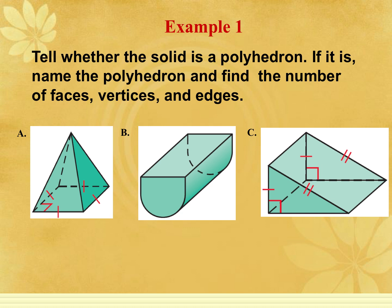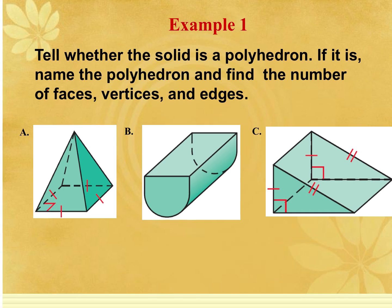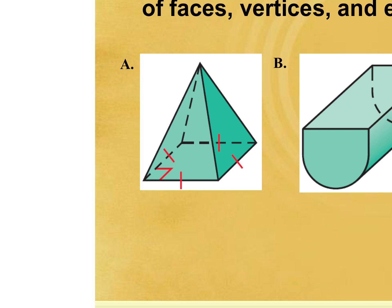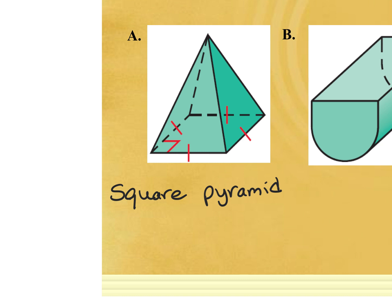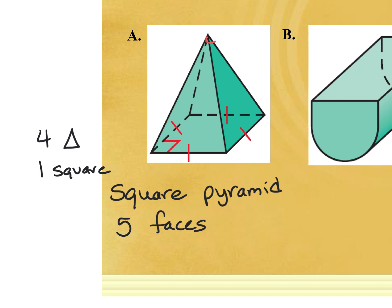In this example, we first decide if the solid is a polyhedron, then name it, and find the number of faces, vertices, and edges. In the first picture, notice the congruency marks around the base indicating it's a square, and all of the lateral triangle faces meet at a common vertex at the top. Because the base shape is a square, this is a square pyramid. I've got five faces — four lateral triangle faces and one square base.